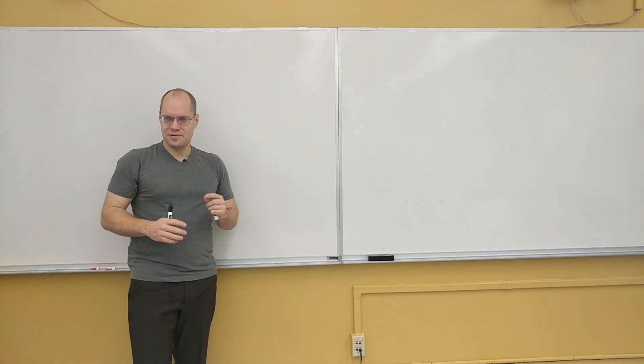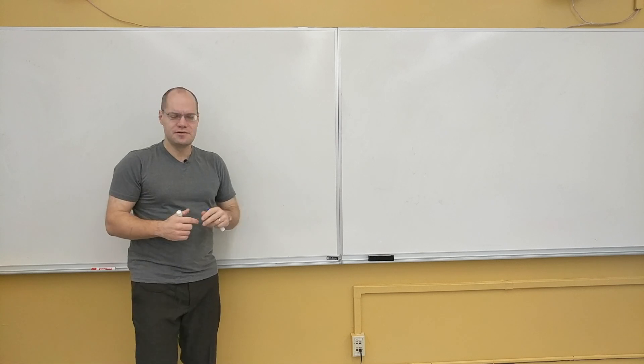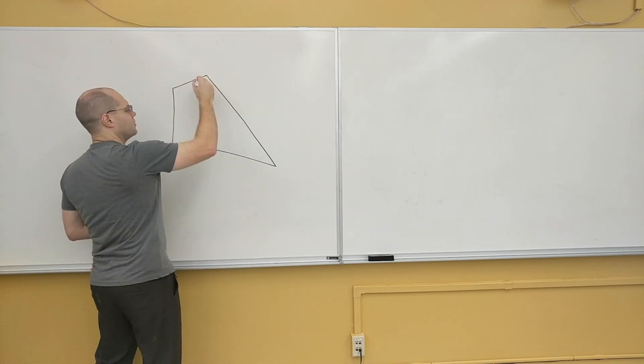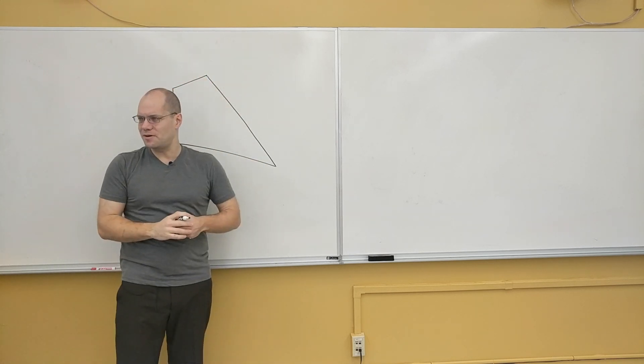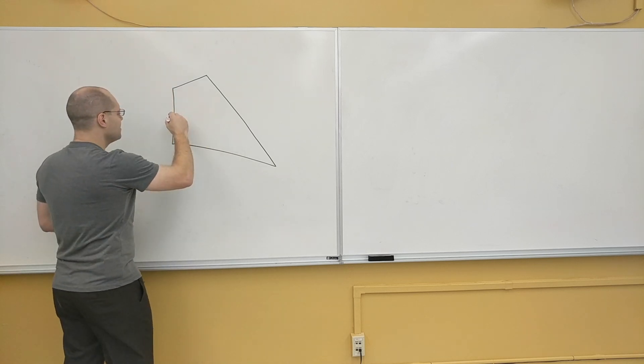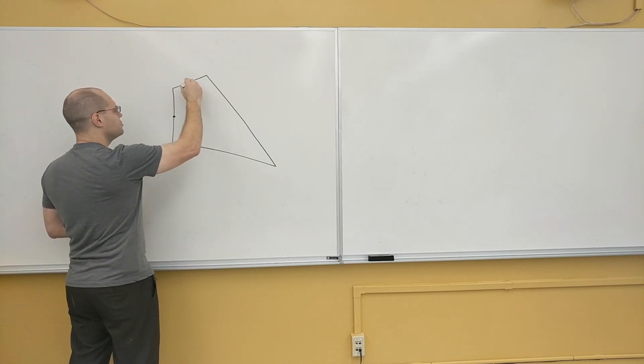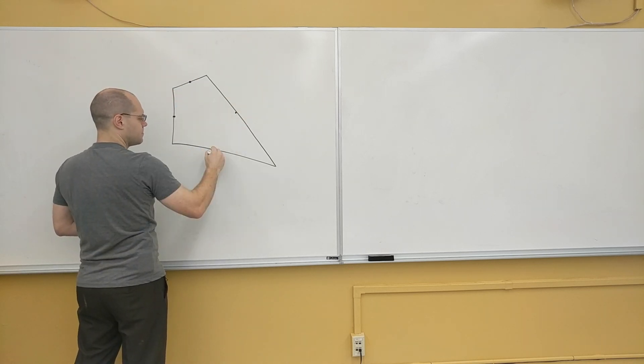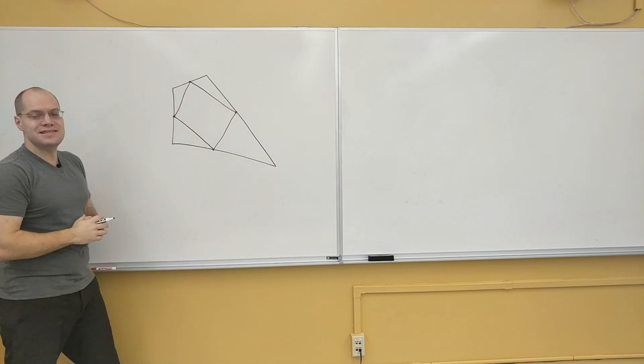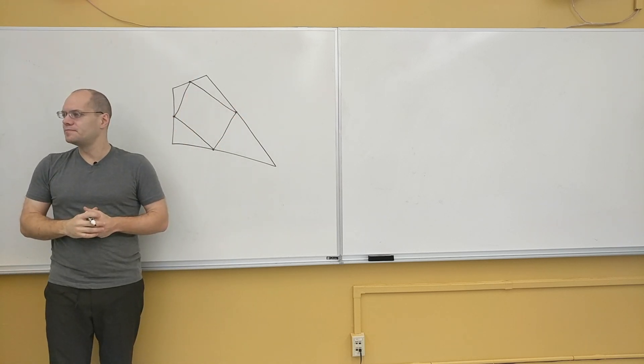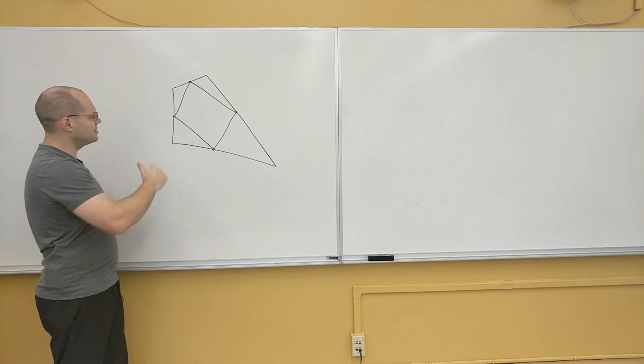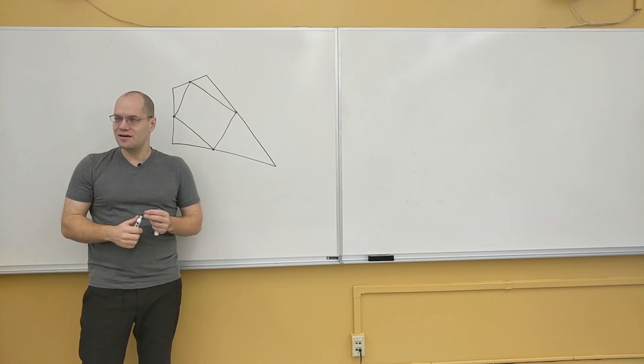Here's the theorem. Suppose you have an arbitrary quadrilateral. Notice I tried to make it as arbitrary as possible. And you select midpoints on each of its sides. You always end up with a parallelogram. So the opposite sides are parallel to each other and are equal.